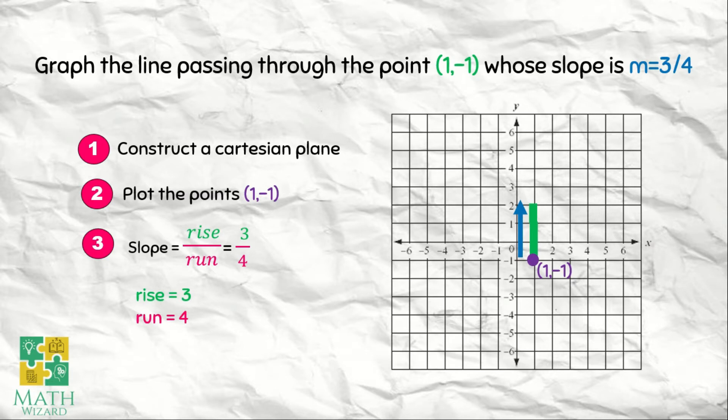And ang run natin is 4. So yung movement natin to the right is 4. 1, 2, 3, 4. And we have a point. At ang point na ito is (5, 2).